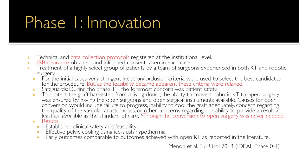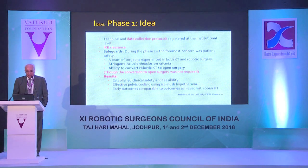A safeguard was in place to ensure no patient was harmed during this first trial. The team had over 15,000 robotic procedures and approximately 2,000 open transplants of collective experience in the operating room, with all open and robotic instruments available for conversion if needed. Stringent inclusion and exclusion criteria were applied, and conversion to open surgery was possible at any time — although it was never actually required. Results established clinical safety and feasibility, effective pelvic cooling, and early outcomes comparable to open transplant.